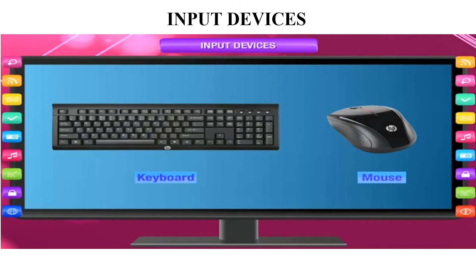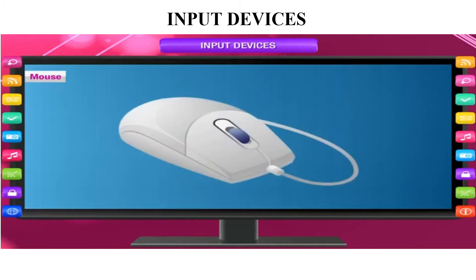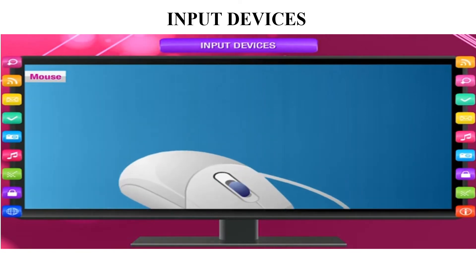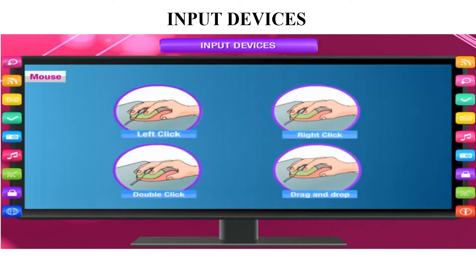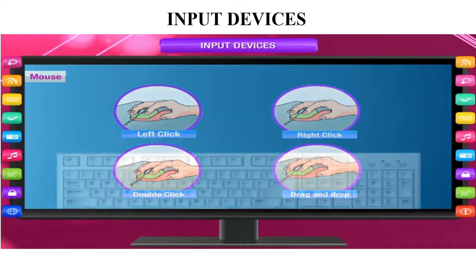The keyboard is used for writing and the mouse is used for drawing. The mouse comes in two categories: wired and wireless. The mouse is used to point to a specific area on screen. It has three buttons — left, right, and a scroll. We use left click, right click, double click, and drag and drop. You can see these pictures also.